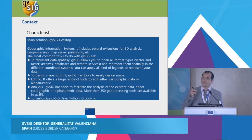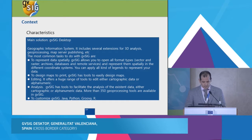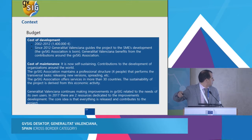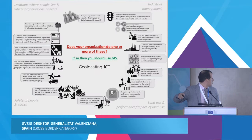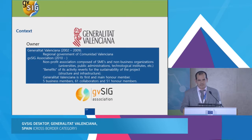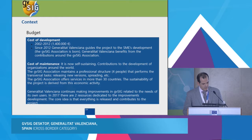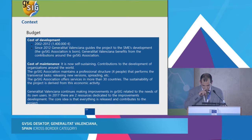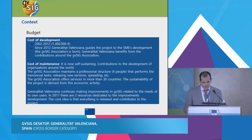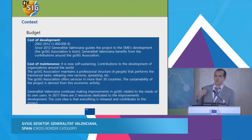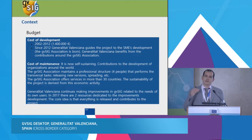The idea is that the benefits of each activity revert to the sustainability of the project. Today the GVSIG association has five business members, 61 collaborators, and 51 honor members. About budget: the cost of development was 1,400,000 euros from 2002 to 2012. Since 2012, the project is self-sustaining. The GVSIG association maintains a professional structure of four people, and Generalitat Valenciana continues making improvements in GVSIG related to the needs of its users. Everything is released and contributes to the project.